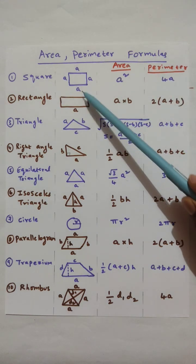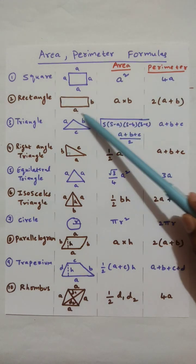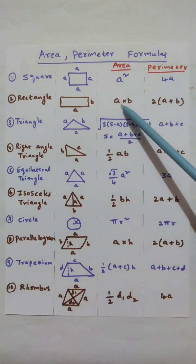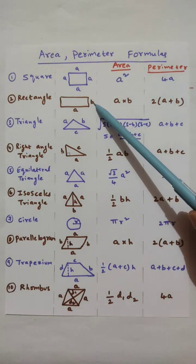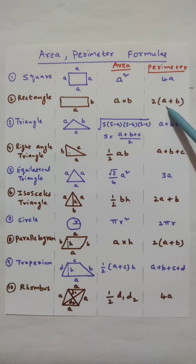Rectangle where opposite sides are equal in length and not all sides are equal. Area is A into B, that is length into breadth. Perimeter is 2 into A plus B.